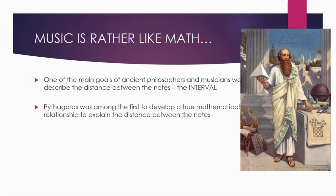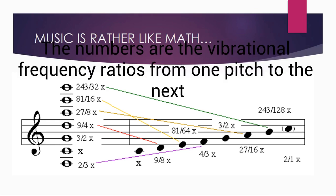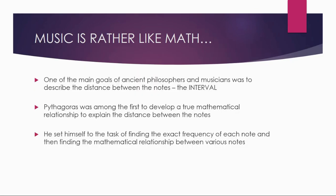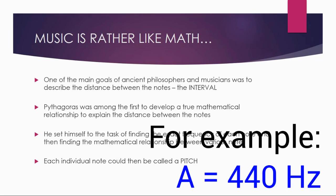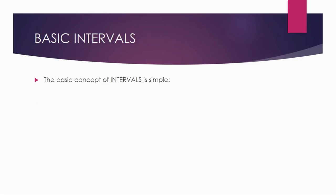Pythagoras was actually among the first to develop a true mathematical relationship to explain this distance between the notes. He set himself to the task of finding the exact frequency of each note and then finding the mathematical relationship between those various notes. Once he had the individual note plucked out of thin air and had a reading for it, that individual note could be called a pitch — that fixed frequency of vibration or sound. I go into more depth on this in Part 1, so check that out if you're interested.